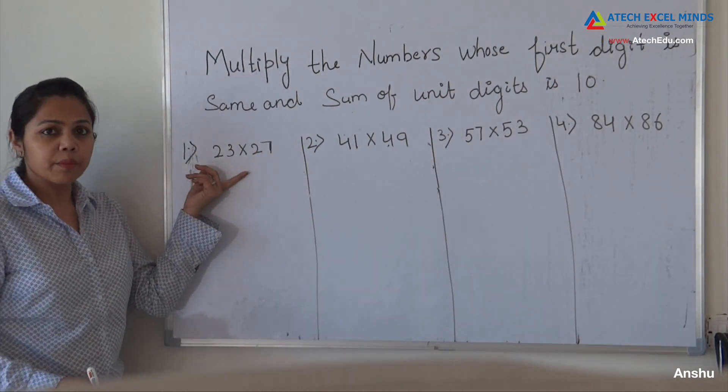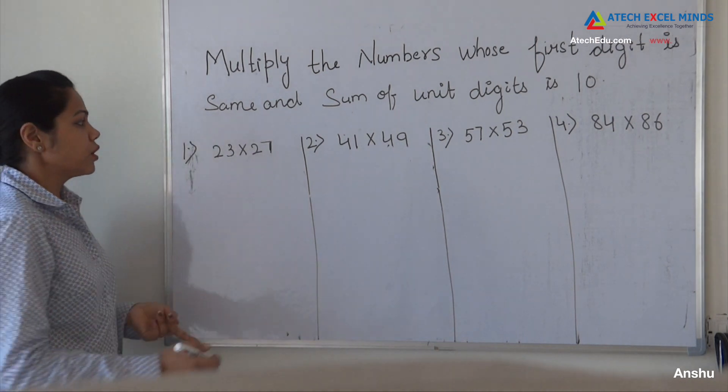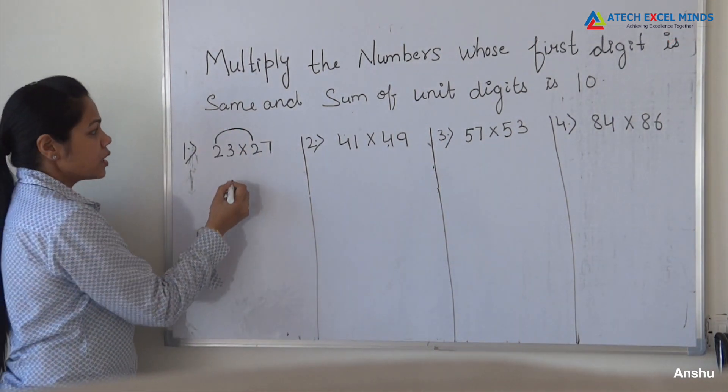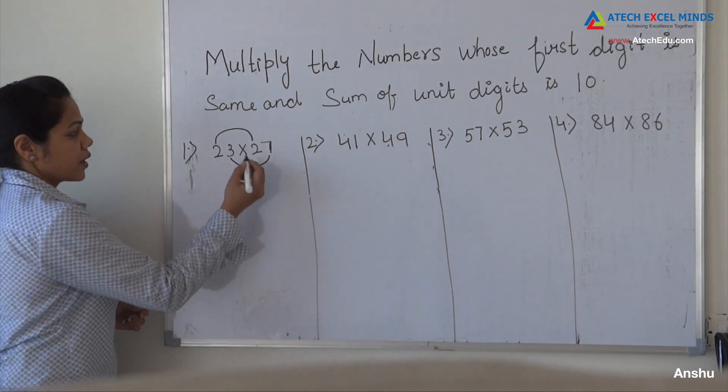Let us take an example. I have to multiply 23 by 27. So first I will check: the first digit is the same and the sum of unit digits is 10. Yes, it is 10.